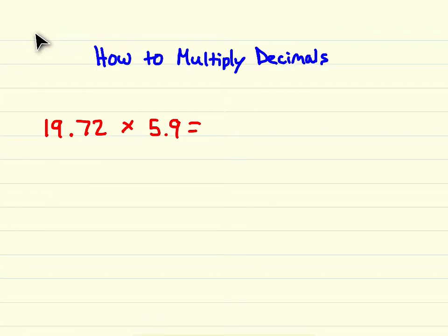Our problem today is 19 and 72 hundredths times 5 and 9 tenths. To multiply decimals, the first thing you need to do is line up your decimals vertically, lining up the digits and not the decimals. So we have 19.72 times 5.9. Again, notice how my digits are lined up and not my decimals.